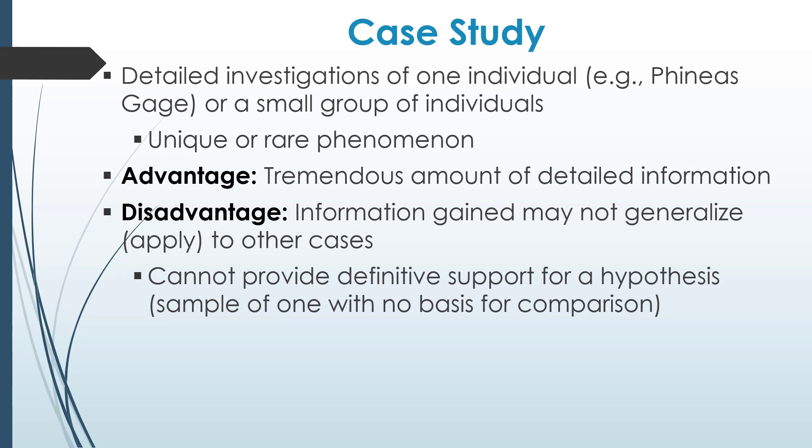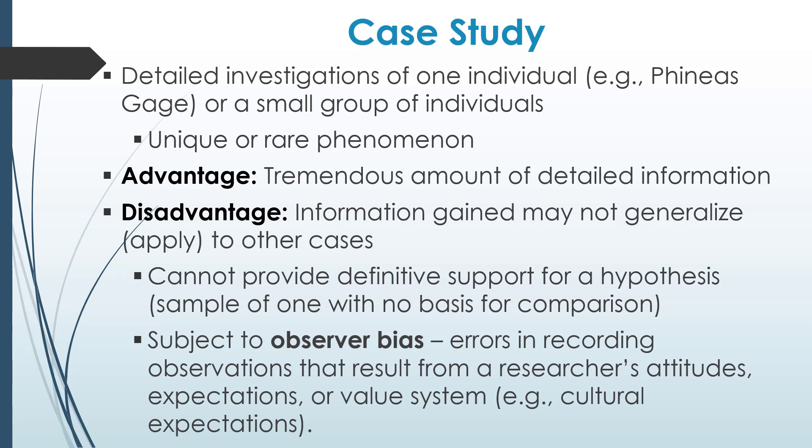The case study method also cannot provide definitive support for a hypothesis. You have only a sample of one — in research terminology, an n of one — and you have no basis for comparison. The case study research design is also subject to observer bias, which is when the researcher makes errors in recording observations that result from the researcher's attitudes influencing the way they see the data. Their expectations may influence the data they collect.